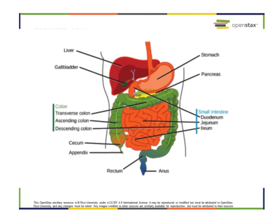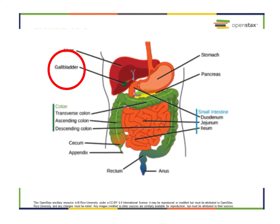There are also accessory organs — things that work to add different kinds of enzymes or secretions that help facilitate digestion. Those include the gallbladder, the liver, and the pancreas. The liver has a big role in the digestion of fats and detoxifying blood. The liver is where bile is produced, and bile helps break down fats. It also absorbs vitamins and fatty acids and synthesizes many plasma proteins.